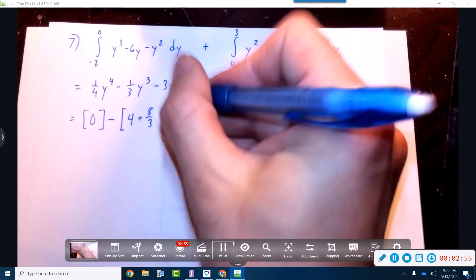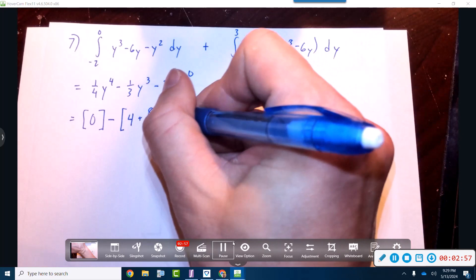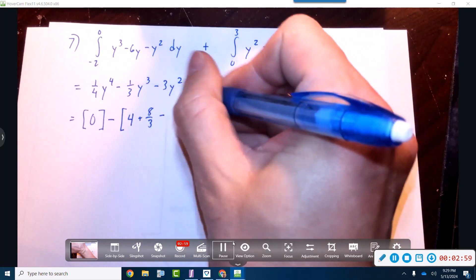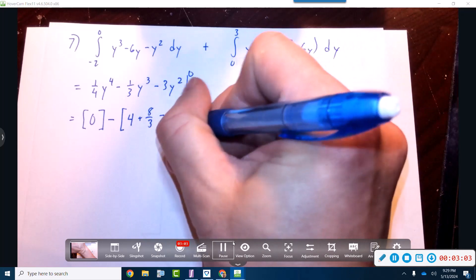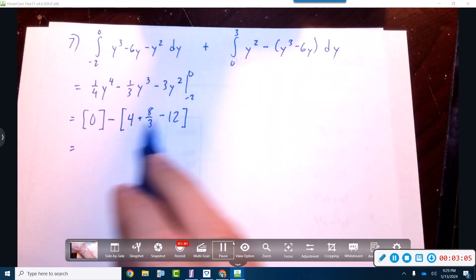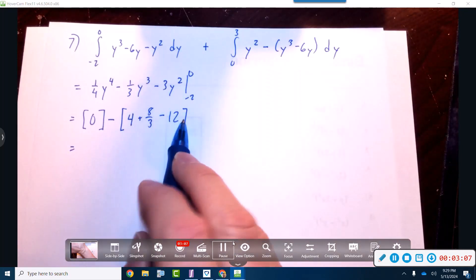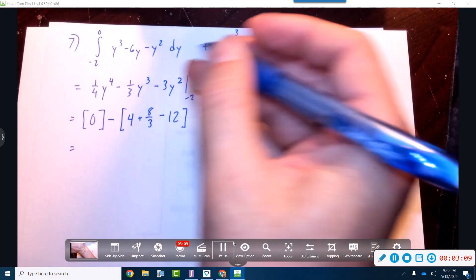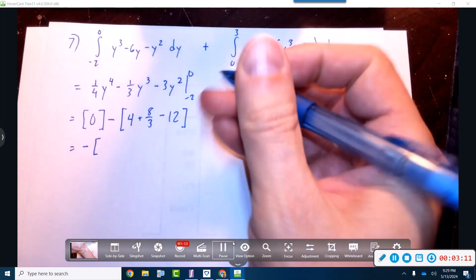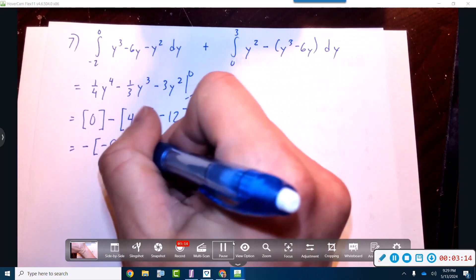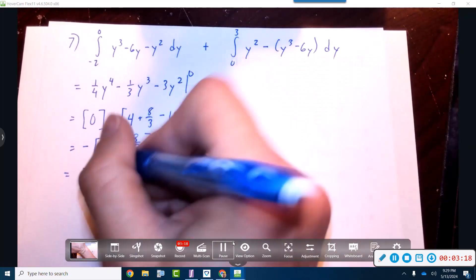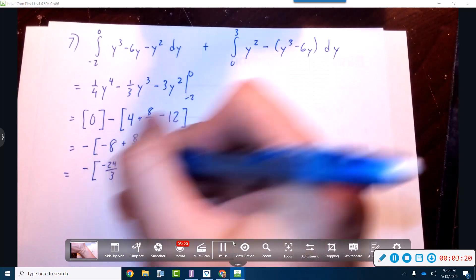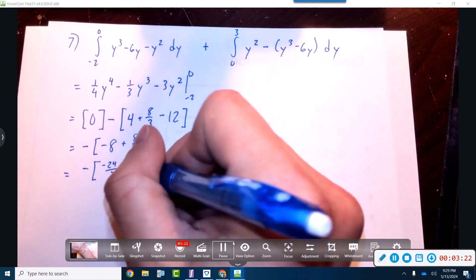Then we've got minus, minus two squared. Negative two squared is positive four, minus 12. Those two will combine for negative eight. So minus negative eight plus eight over three. Man, I do not trust myself. Negative 24 over three plus eight over three.